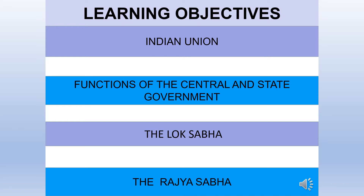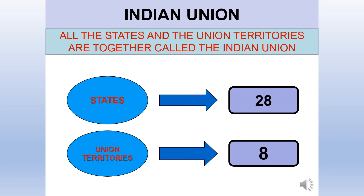Now, in this chapter, we are going to study about the Indian Union, functions of the central and the state government, the Lok Sabha and the Rajya Sabha. India is a very vast country. It is divided into states and union territories, and all these states and union territories together are called the Indian Union.